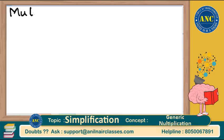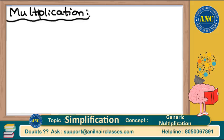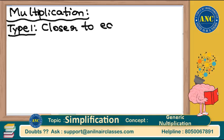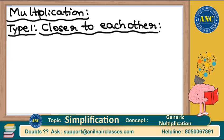Welcome to this lesson on multiplication. We will discuss Type 1: how to multiply two numbers when they are closer to each other. We will cover 3 to 4 examples for this type.